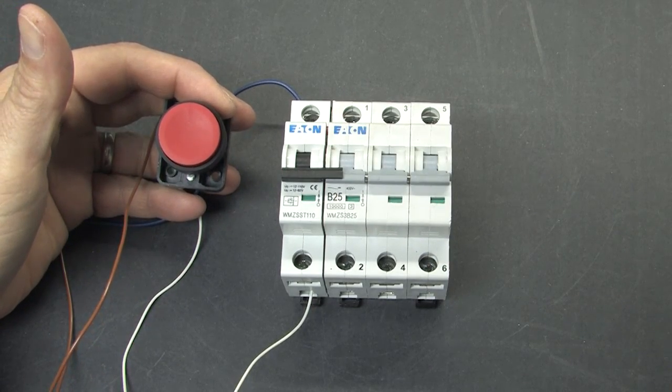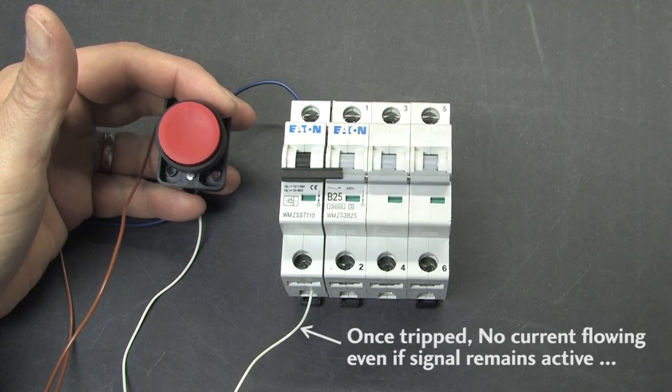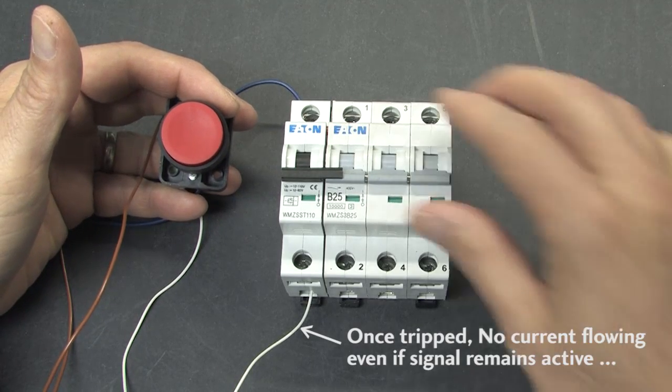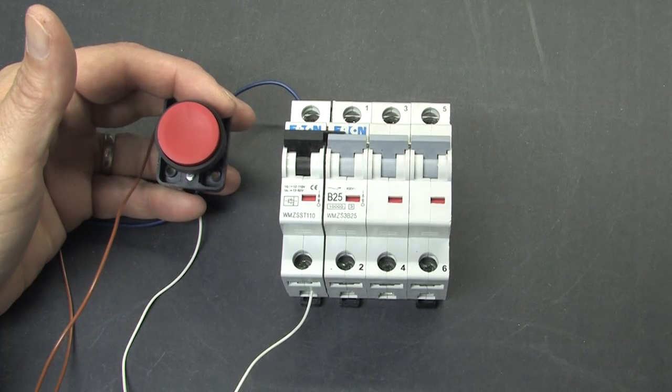Once tripped, this device typically disconnects itself electrically so there is no current flowing through the control wires and you have to manually reset the breaker after it has been tripped.